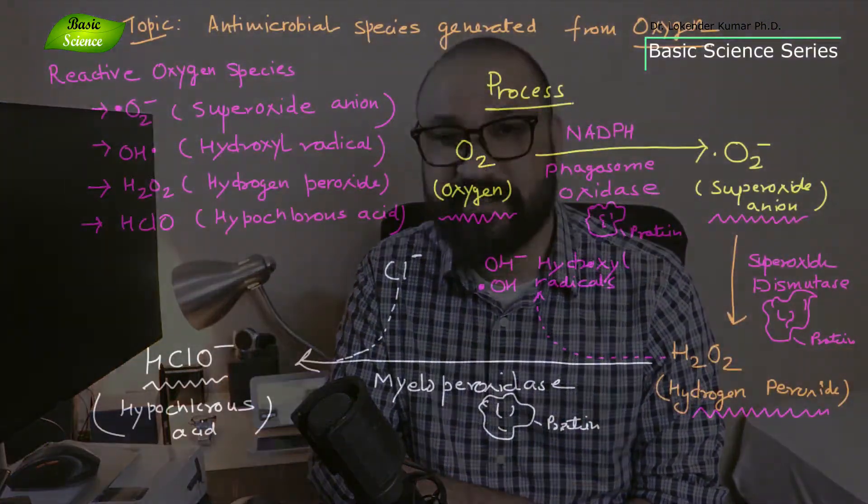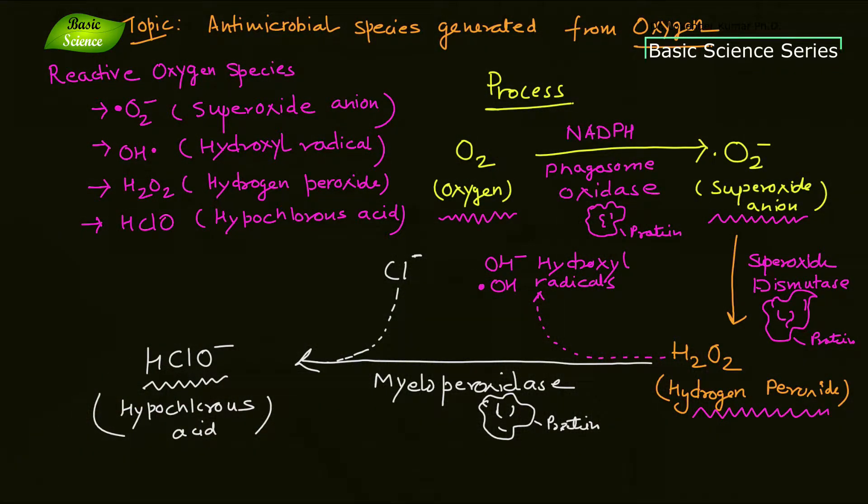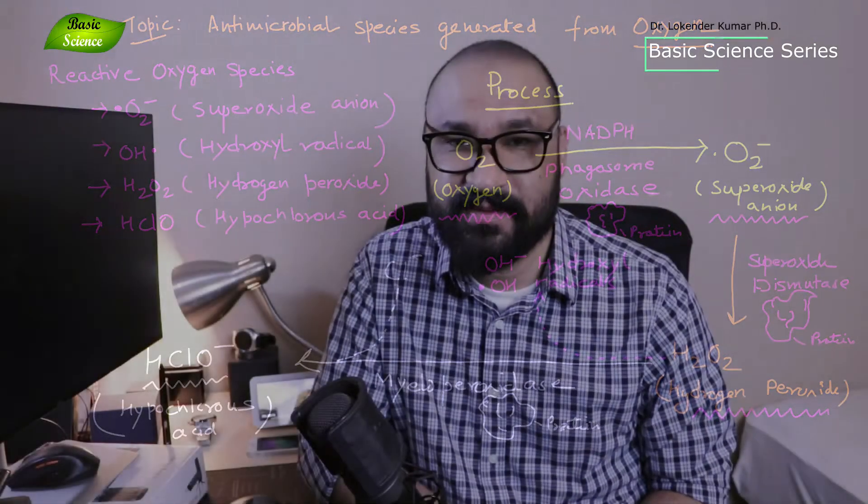In this video we will discuss what are the important reactive oxygen species that are involved in the killing of microorganisms, how our immune system activates and produces these important reactive species. We'll discuss the process of the formation of these species and the proteins and enzymes that are involved in the formation of these reactive oxygen species.